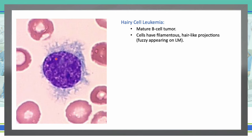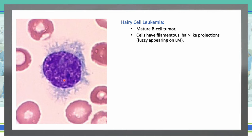Next we have hairy cell leukemia. These are mature B cell tumors that have filamentous, hairy-like projections — that is hairy cell leukemia.